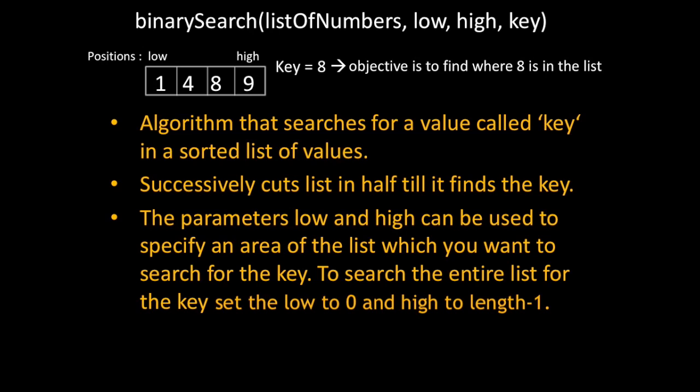So here's what binary search is about. Binary search is an algorithm that searches for a value called key in a sorted list of values. So the key could be a word and the sorted list of values could be a dictionary. You're looking for a word in a dictionary. It successfully cuts the array in half till it finds the key so it can do this because it is sorted.